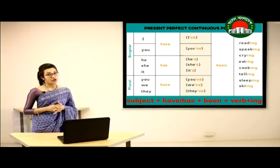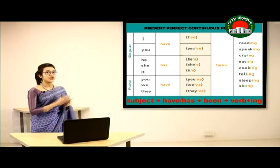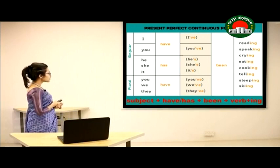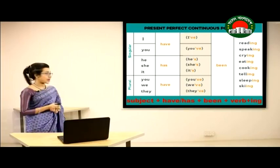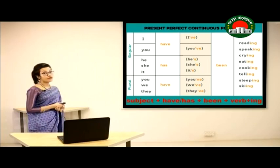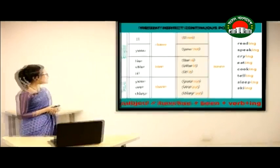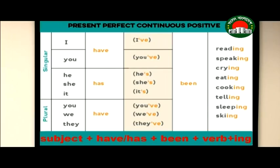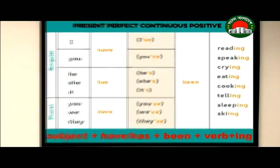The positive structure of Present Perfect Continuous Tense is: Subject + have/has + been + verb+ing. For example: 'I have been speaking,' 'I have been reading,' 'He has been crying,' 'She has been cooking,' 'We have been skiing,' 'He has been telling.' When the subject is third person singular (he, she, it), we use 'has'; in all other cases, we use 'have.'